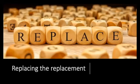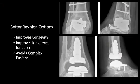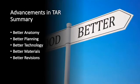In the hip and knee, there are great revision systems. We lacked that in the ankle, but now with our technology, replacing the replacement has been better — we have better revision options. This allows us to improve the longevity of the total ankle in general, because we have a revision system. We can have better functional outcomes and theoretically avoid complex fusions that sometimes have poor outcomes. Advancements in total ankles — better anatomy, better planning, better technology, better materials, better revisions — have allowed us to do this in more patients and improve our outcomes. Research has driven this field and made it beneficial to our patients.